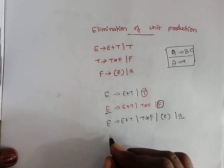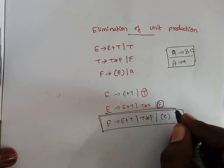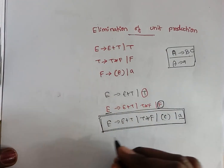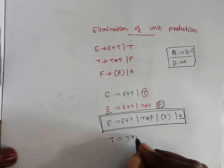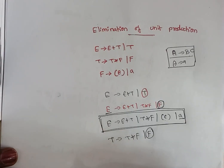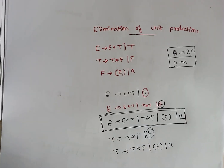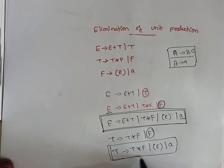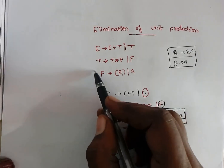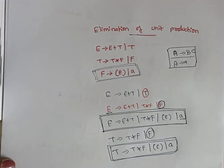Similarly, when you consider this production, t tends to t is one production — eliminate the unit production. We take the next production t tends to t star f. Here we have a unit production. Instead of f, substitute the production for f. You will have it as t star f followed by e followed by a. Now this is also an eliminated unit production format. And for f, there is no unit production.